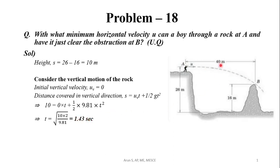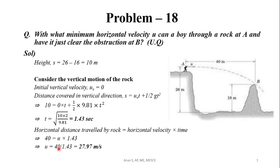The horizontal distance traveled by the rock will be horizontal velocity U times time t, which is 1.43 seconds. The horizontal distance traveled is 40 meters and the time is 1.43 seconds. From that, we can find out U to be 40 divided by 1.43, that is equal to 27.97 meters per second. So, the minimum horizontal velocity with which the boy should throw the rock is 27.97 meters per second.